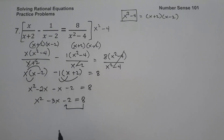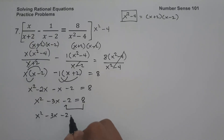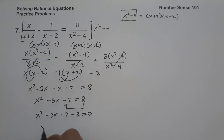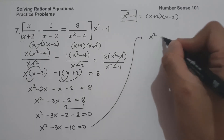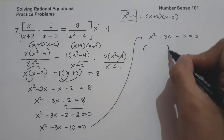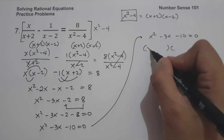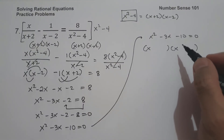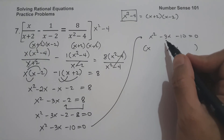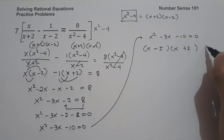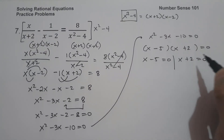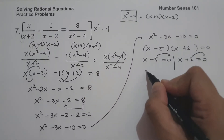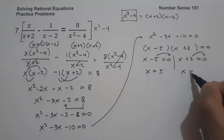Moving 8 to the other side: x squared minus 3x minus 2 minus 8 equals 0, so x squared minus 3x minus 10 equals 0. Factoring: the factors of x squared are x and x, and we need two numbers that multiply to negative 10 and add to negative 3: that is negative 5 and positive 2. So x minus 5 equals 0 and x plus 2 equals 0, giving x equals positive 5 and x equals negative 2.